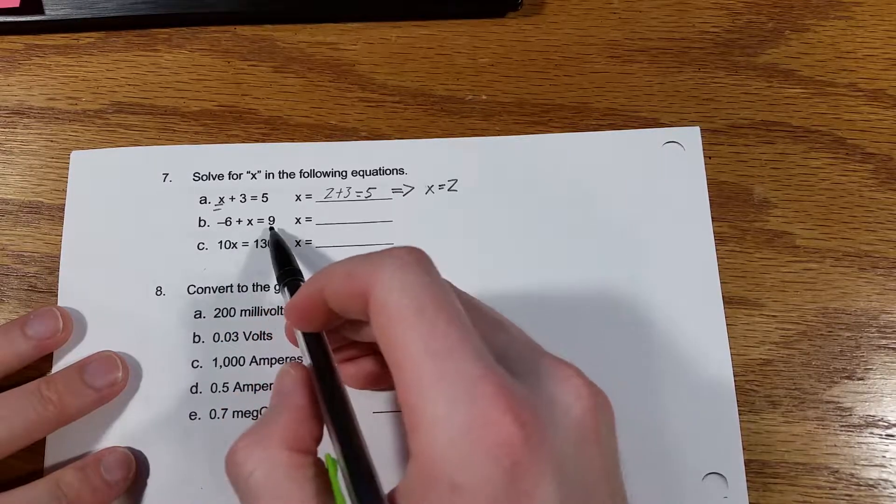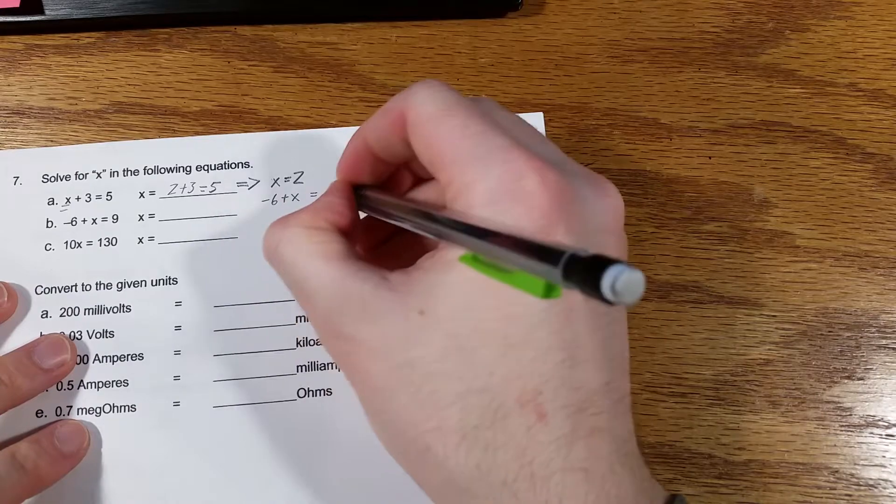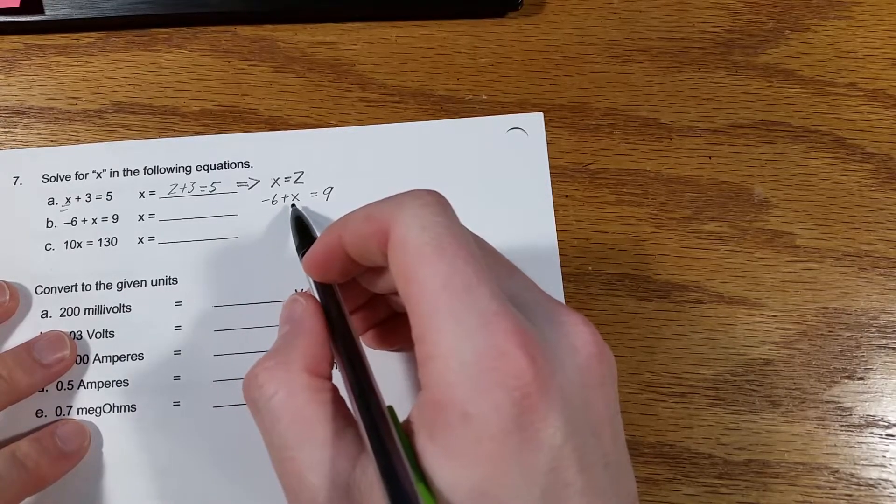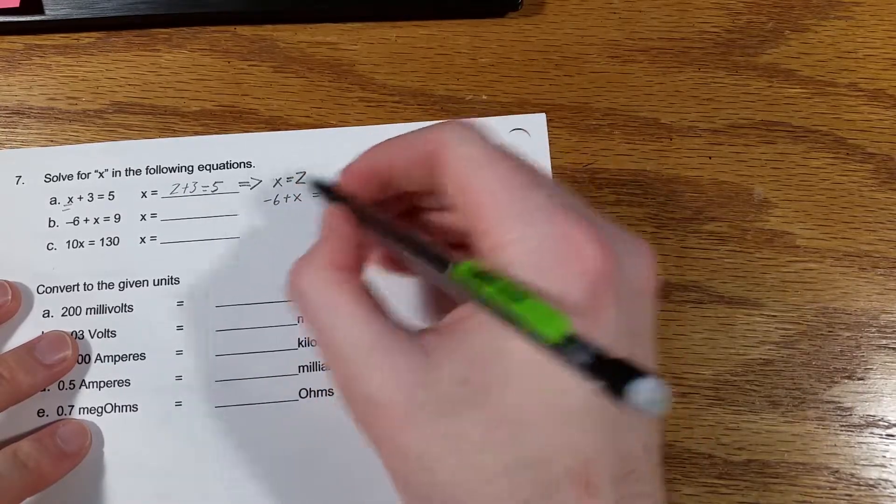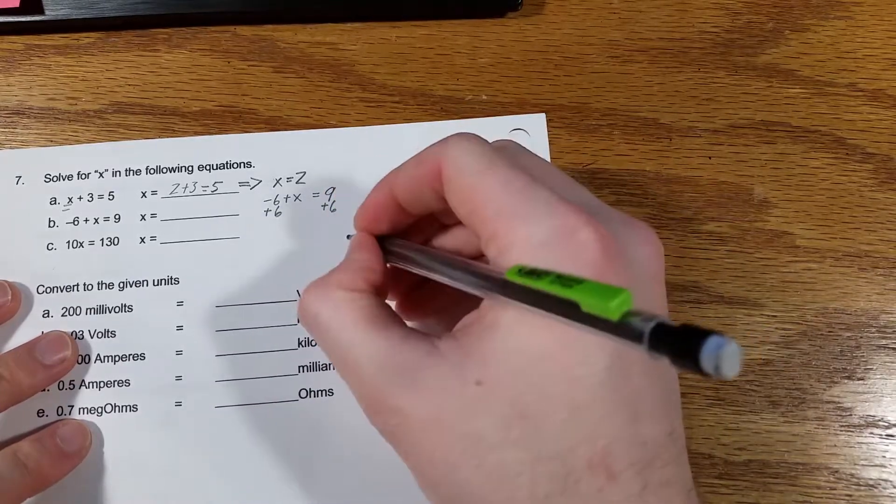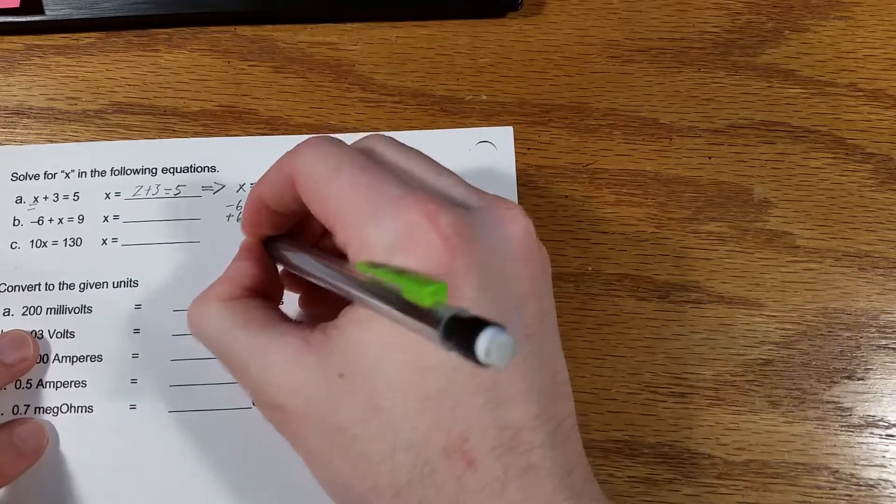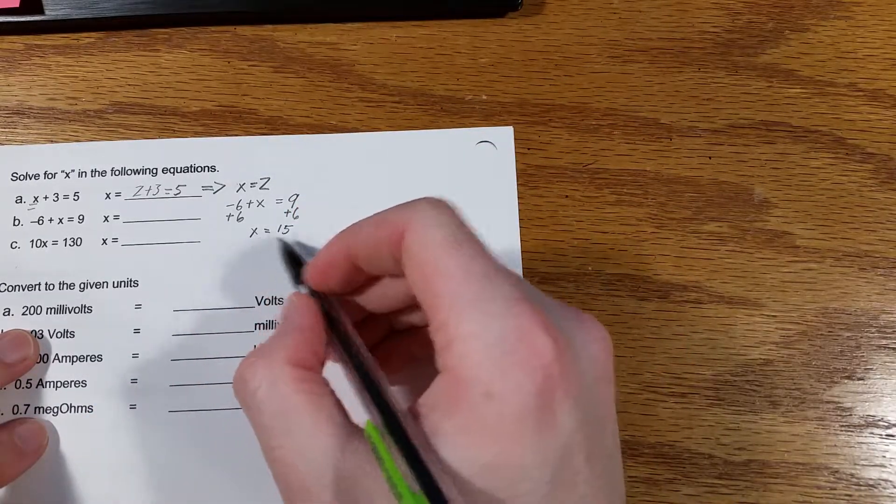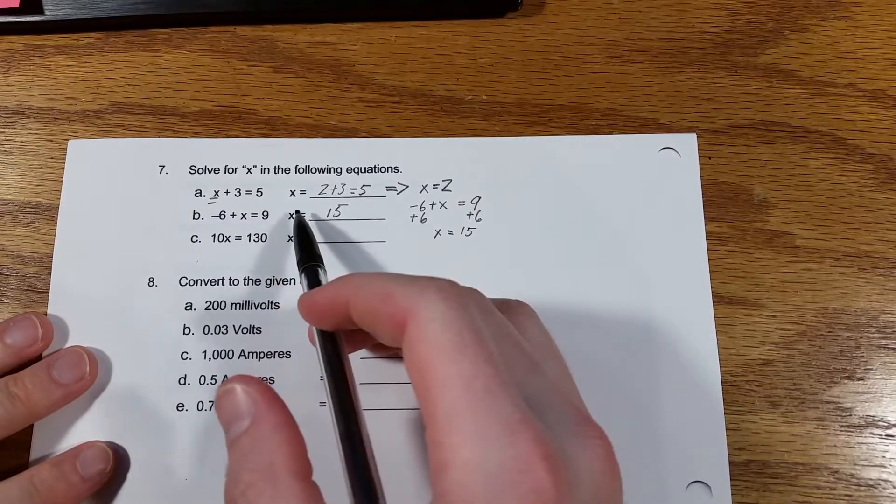B, negative 6 plus x equals 9, and this one's a little more tricky. But what you can do, we want to get this negative 6 away from this x so that we know what x is equal to, because that's what it's asking us for. So in order to get that negative 6 away from here, we would add 6. And whatever you do to one side of an equation, you have to do to the opposite side of an equation. So negative 6 plus 6 is 0, so that leaves x on this side. And 9 plus 6 is 15. And that means we just solved for x, so x is 15. And you could check it, if you put this back in here, negative 6 plus 15 equals 9, and that is correct.